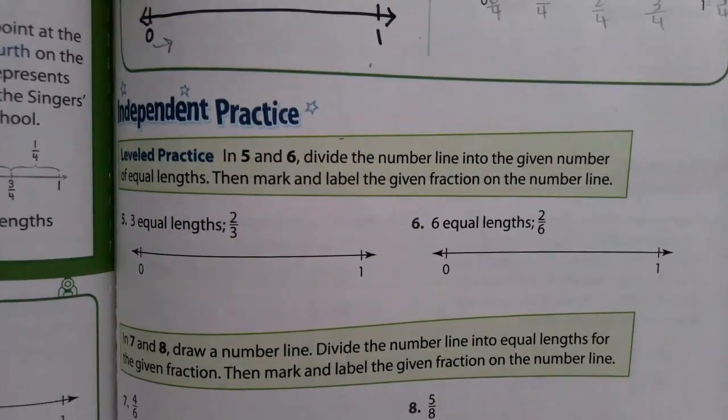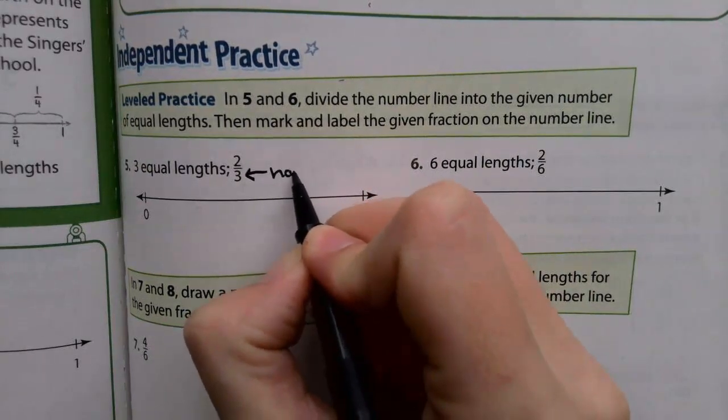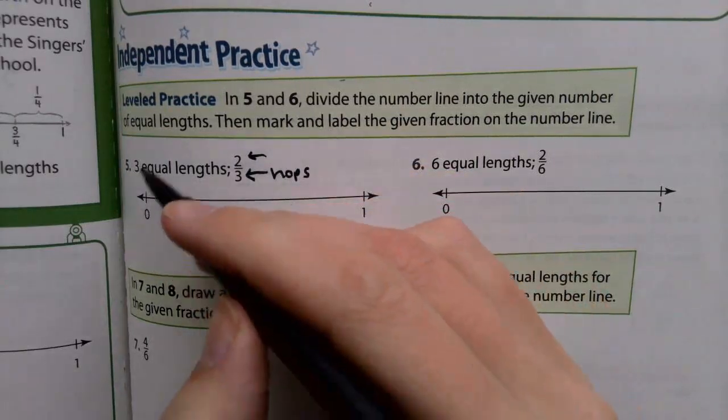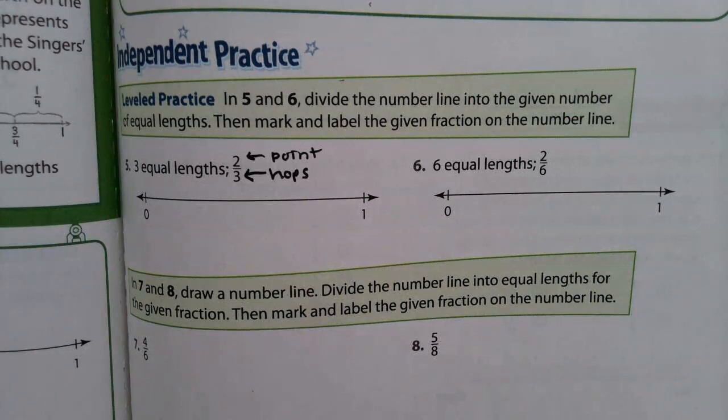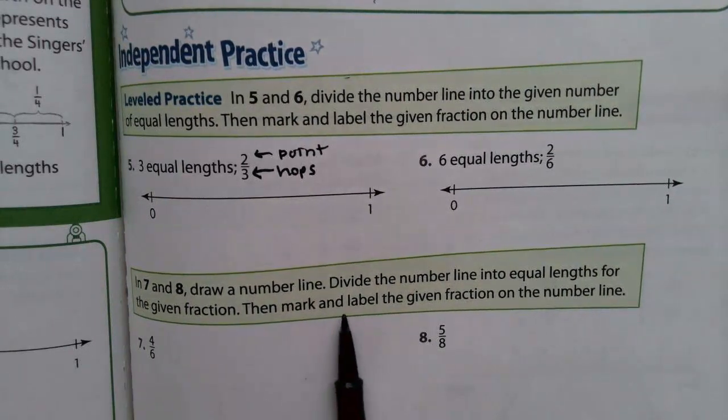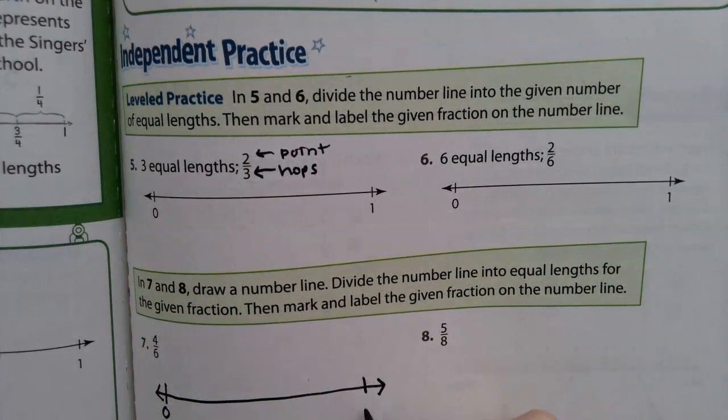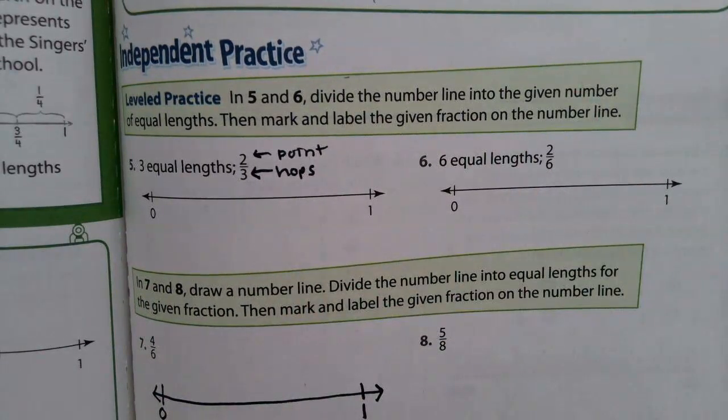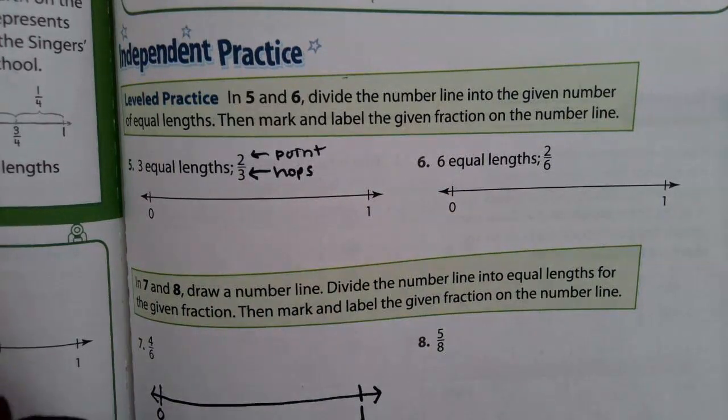Now for your practice today, you'll be doing that same thing on your own. Remember that the denominator is how many hops you will take, and the numerator is the hop that you'll be putting your point. Make sure that you use those three steps that we wrote on page 628. Number 7 and 8, you'll be drawing your number line. Divide the line into equal lengths for the given fraction, then mark and label the fraction. Take your time. Make sure that your hops are even, and you follow those three steps. Once you are finished with those four problems, you can move on to the next activity for today.